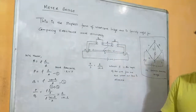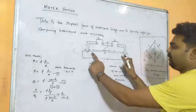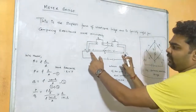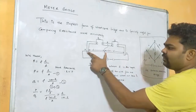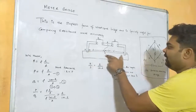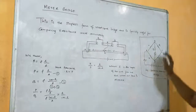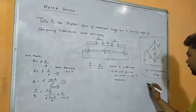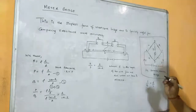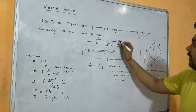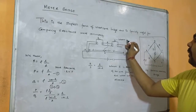R is the resistance box. The 100 cm wire is divided into two parts: A to D is length l, and D to C is (100 - l). In a balanced Wheatstone bridge, P/Q must equal R/S. Here, S is the unknown resistance which we need to find.